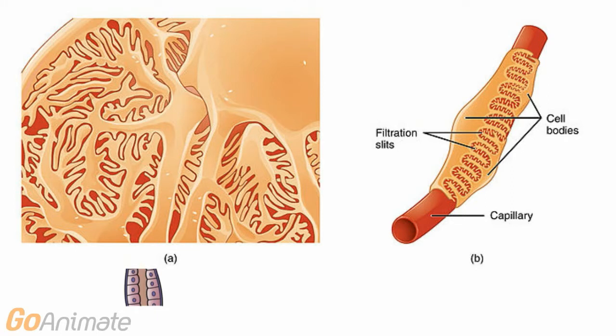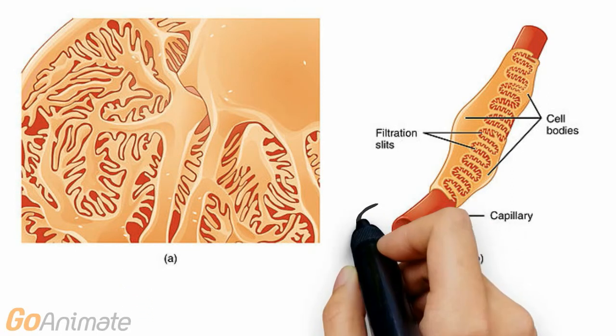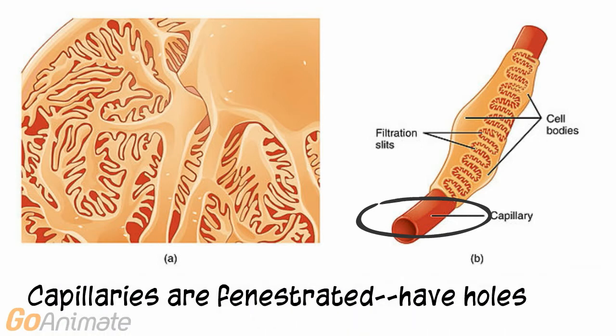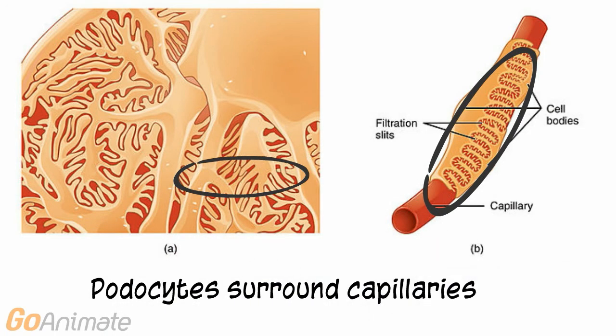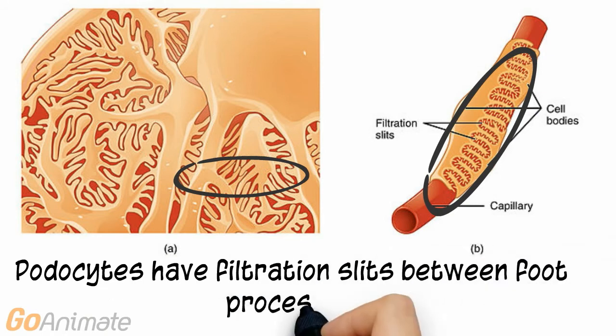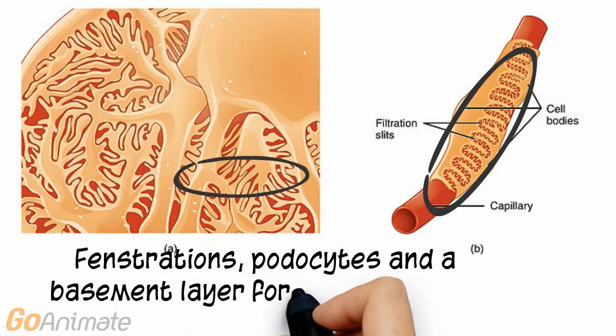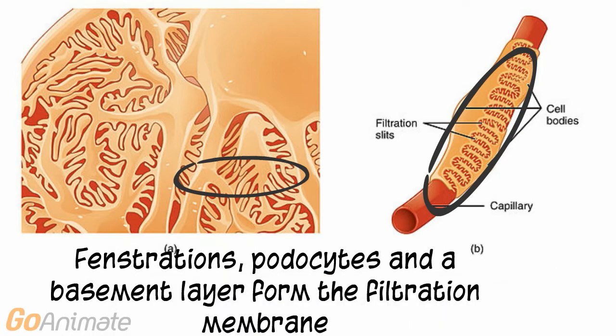Let's take a closer look at these structures. The capillaries inside of the glomerulus are fenestrated, meaning they contain holes. Special structures called podocytes surround the capillaries. Podocytes have filtration slits in their foot processes. The fenestrations, podocytes, and a basement membrane between them together form the filtration membrane.